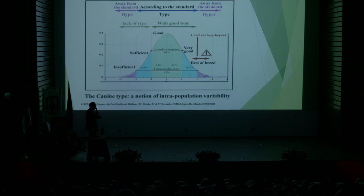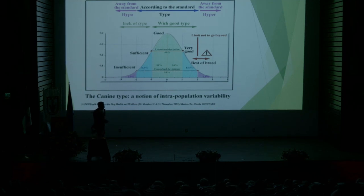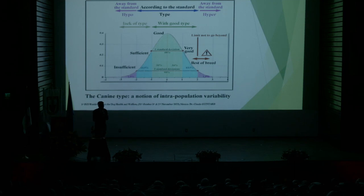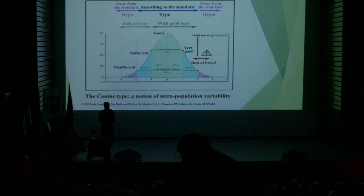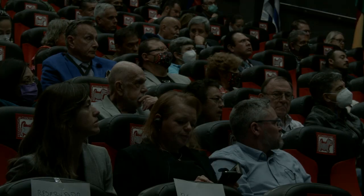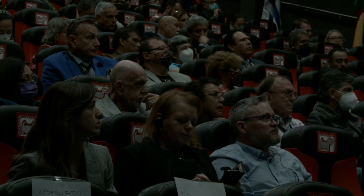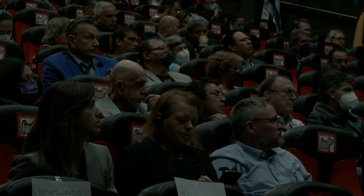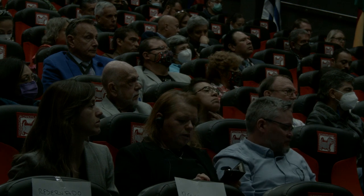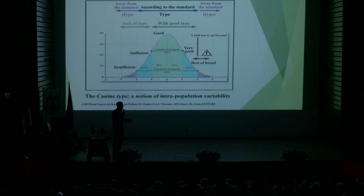In Dogue de Bordeaux, the mean value is about 0.4. It means that animals with a craniofacial ratio of 0.4 are in the middle of the population. Here we have a craniofacial ratio of about 0.3 — these are animals which are coming to the hypertype in this breed. And here, animals with a longer muzzle have a craniofacial ratio of about 0.5. So for the Dogue de Bordeaux breed, the limit between the best of the breed and the hypertype animal is around 0.3.